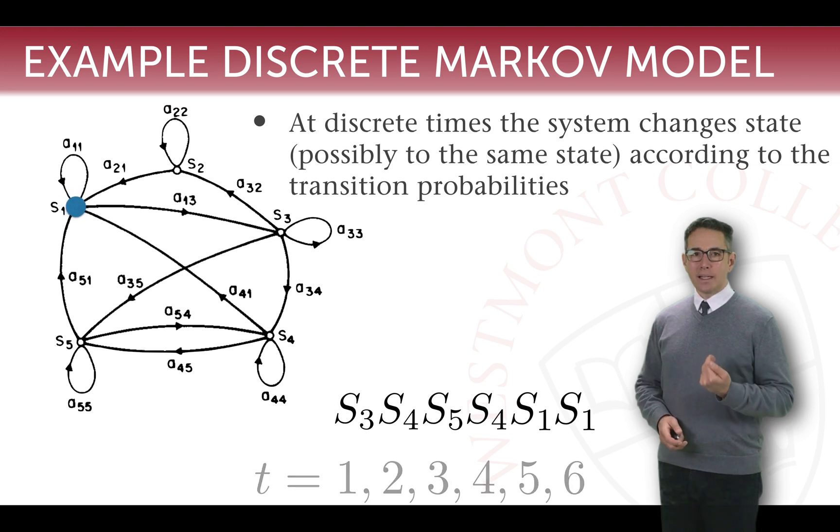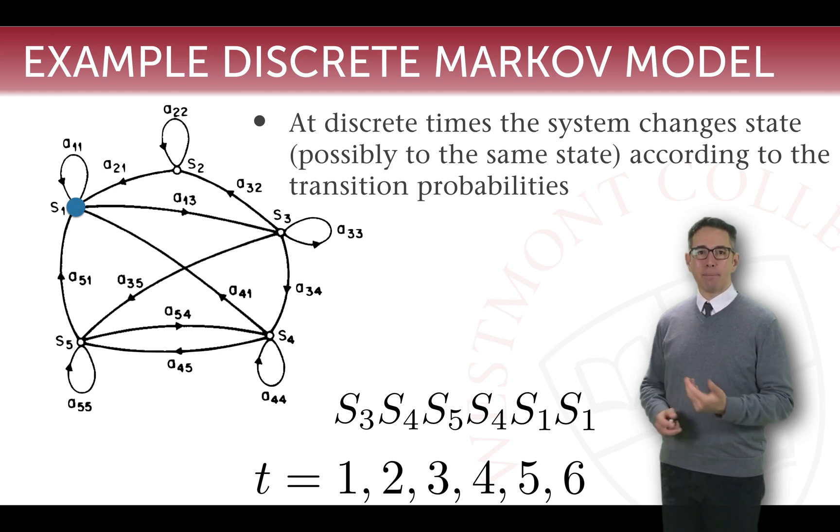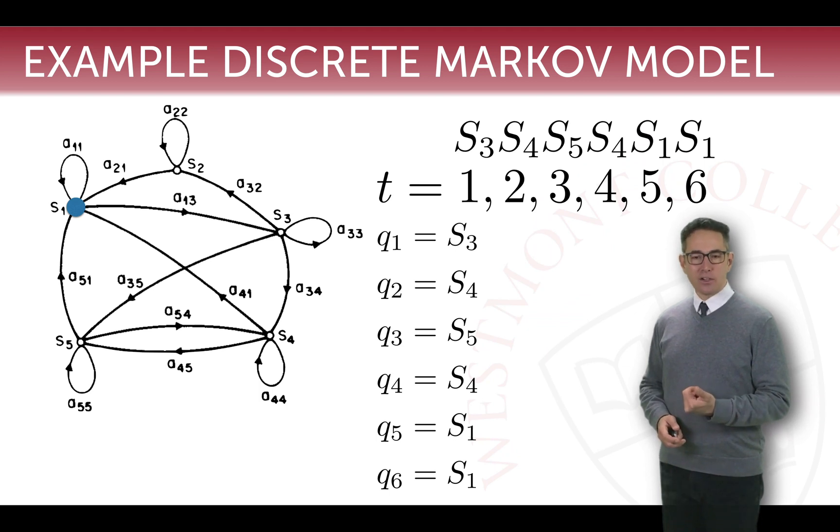Now what we want to do is acknowledge that these happen on particular beats and we're going to number the beats. We'll use one indexing since we're sticking in a mathematical world rather than a coding world. And we want to take that notation of those beats and represent them with a new variable q. q sub i. And in this case, q sub 1 therefore is equal to the first state that we were in or S3. q2 was S4, q3 was S5, q4 was S4, q5 was S1, and q6 was S1.